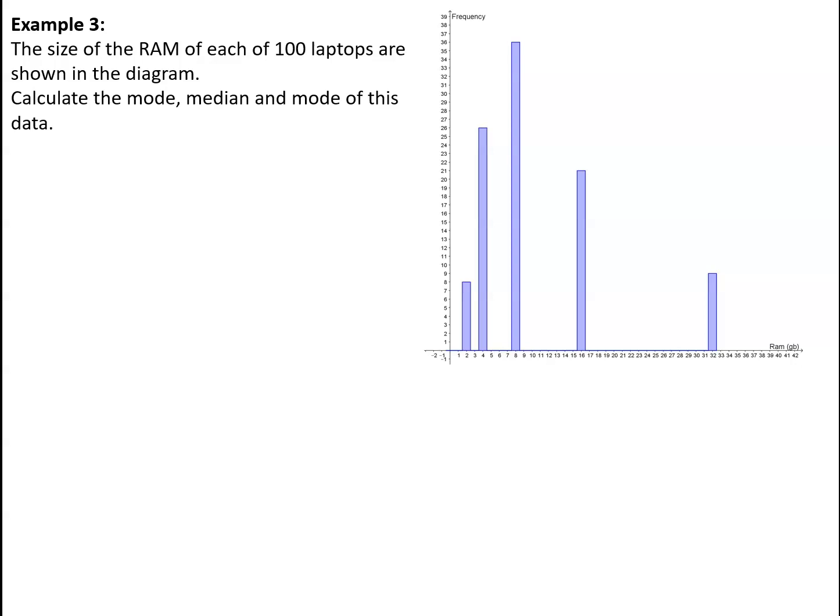For our next example, we're referring back to an example where we've got the RAM, the random access memory, of each of 100 laptops. We've got to calculate the mode, median, and mean of this data. The diagram can be usefully summarized in a table, and it is very clear that the mode is 8 GB RAM, because that's the most common.